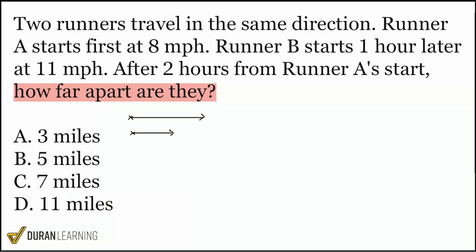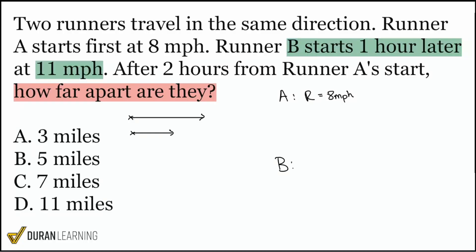For Runner A, the rate equals 8 miles per hour. For Runner B, the rate is 11 miles per hour. With that said, if we want to know how far apart they are, we have to find the individual distances for each runner.